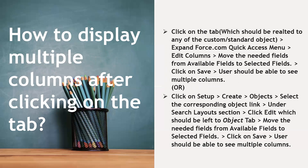How do you display multiple columns after clicking on a tab? There are two options. For option two: go to Setup, select the corresponding object, go to Search Layout, click Edit, and move the needed fields from available fields to selected fields. After that, you will be able to see multiple columns when clicking the tab.